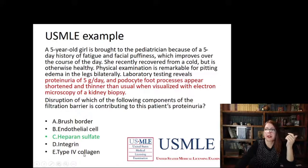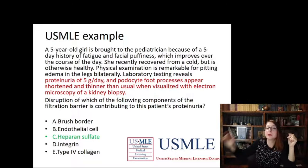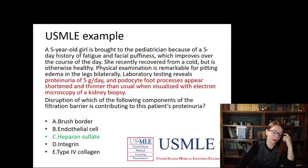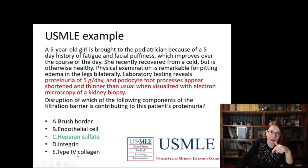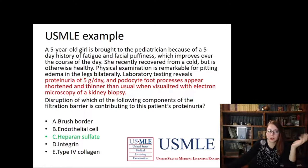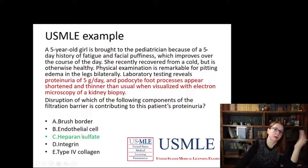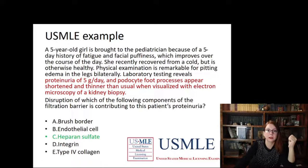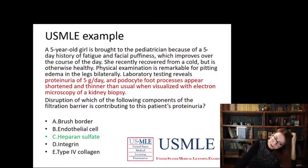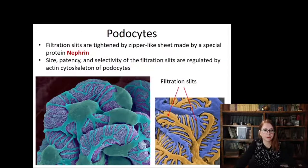The correct answer is heparan sulfate. If type IV collagen were damaged, the holes in the basement membrane would be much larger — not only proteins but even erythrocytes would pass through, resulting in both proteinuria and hematuria. Since only proteinuria is present, the answer is heparan sulfate. To choose the correct answer you must know all components of the filtration barrier and their molecular roles — do not ignore these details if you want to perform at a cutting-edge level.